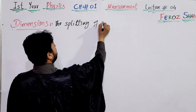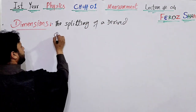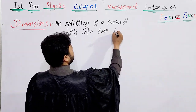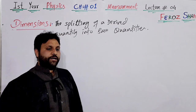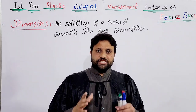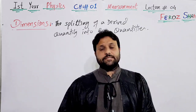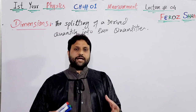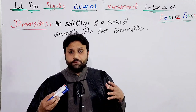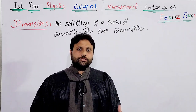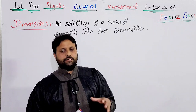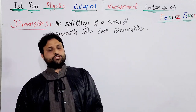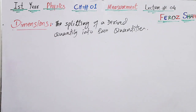Dimension is the splitting of a derived quantity into base quantities. When we split a derived quantity into base quantities, the process is called dimensions. Each and every derived quantity is obtained by multiplying or dividing two or more base quantities. The reverse process — when we split a derived quantity back into its constituent base quantities — is called dimension.